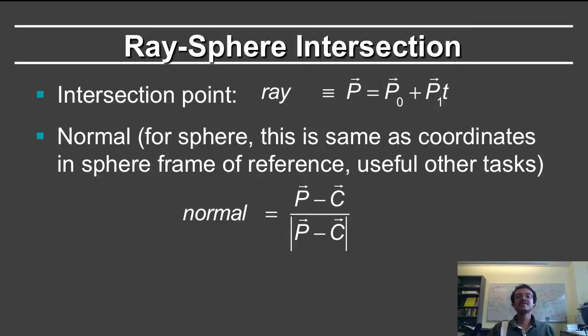Finally, you've solved this equation for the t, which results in an intersection point. Then you need to find what the actual intersection point in physical coordinates is. That's simple, you substitute back into the equation for the ray, p0 plus p1t, where you use the value of t you just solved for.